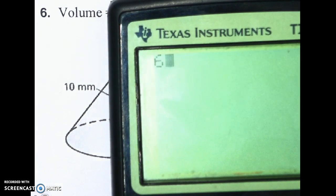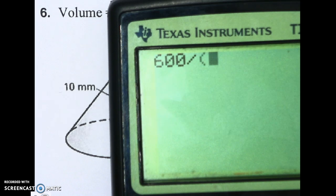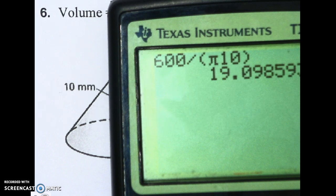Plugging that in real quick. So 600 divided by parentheses. Got to have the parentheses. Pi, 10, end parentheses, and then hit enter.